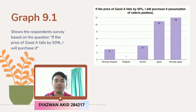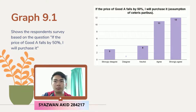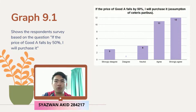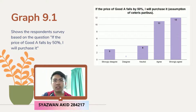There were also 4 respondents who chose moderate as their choice. When the price of good A declined by 50%, most respondents said they would purchase good A due to its lower price compared to good B.